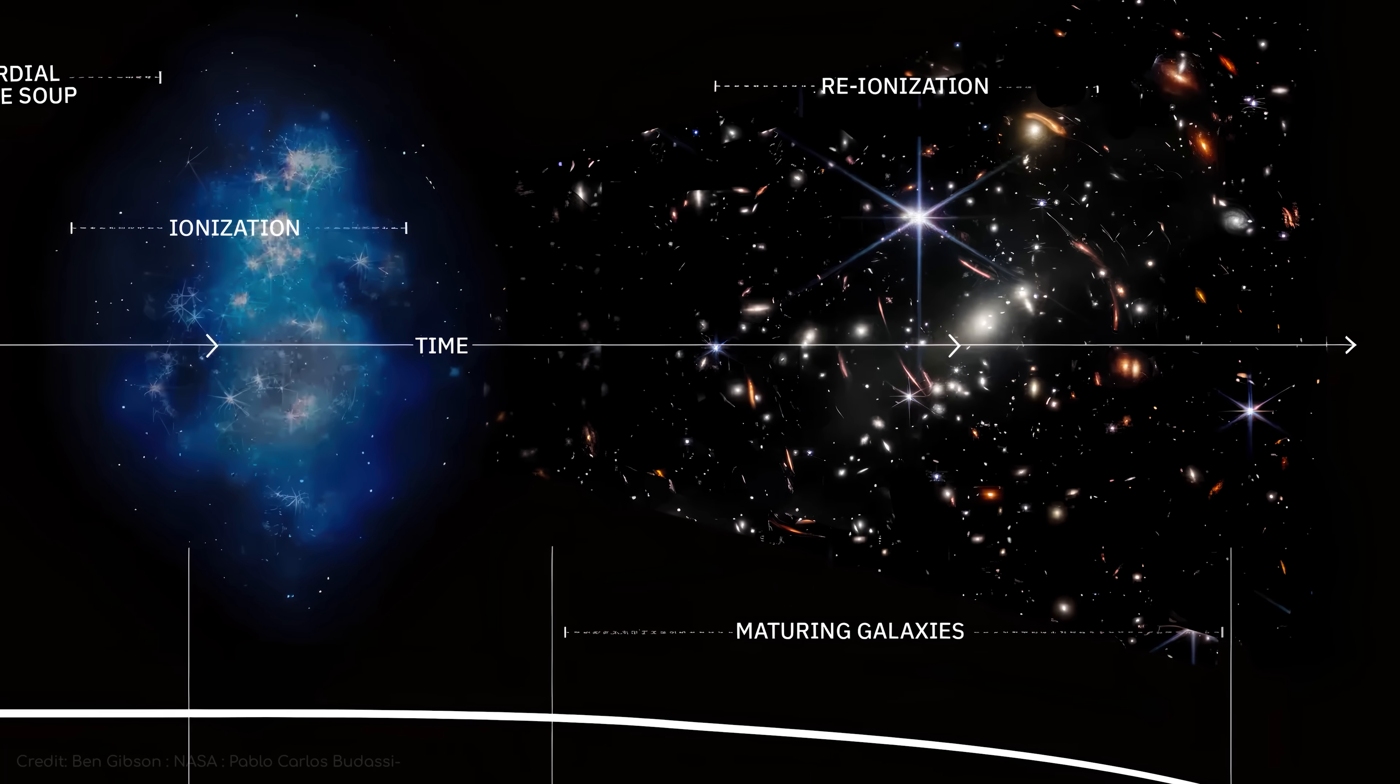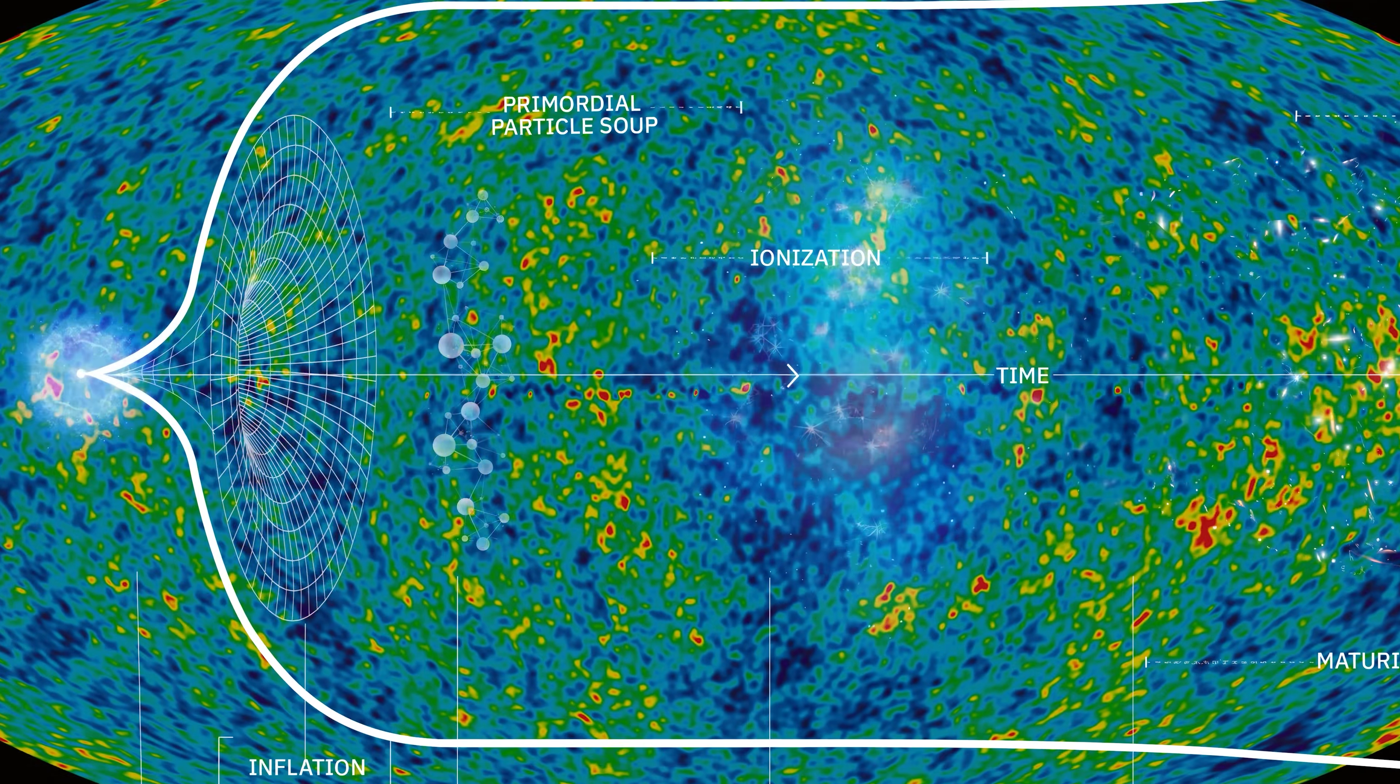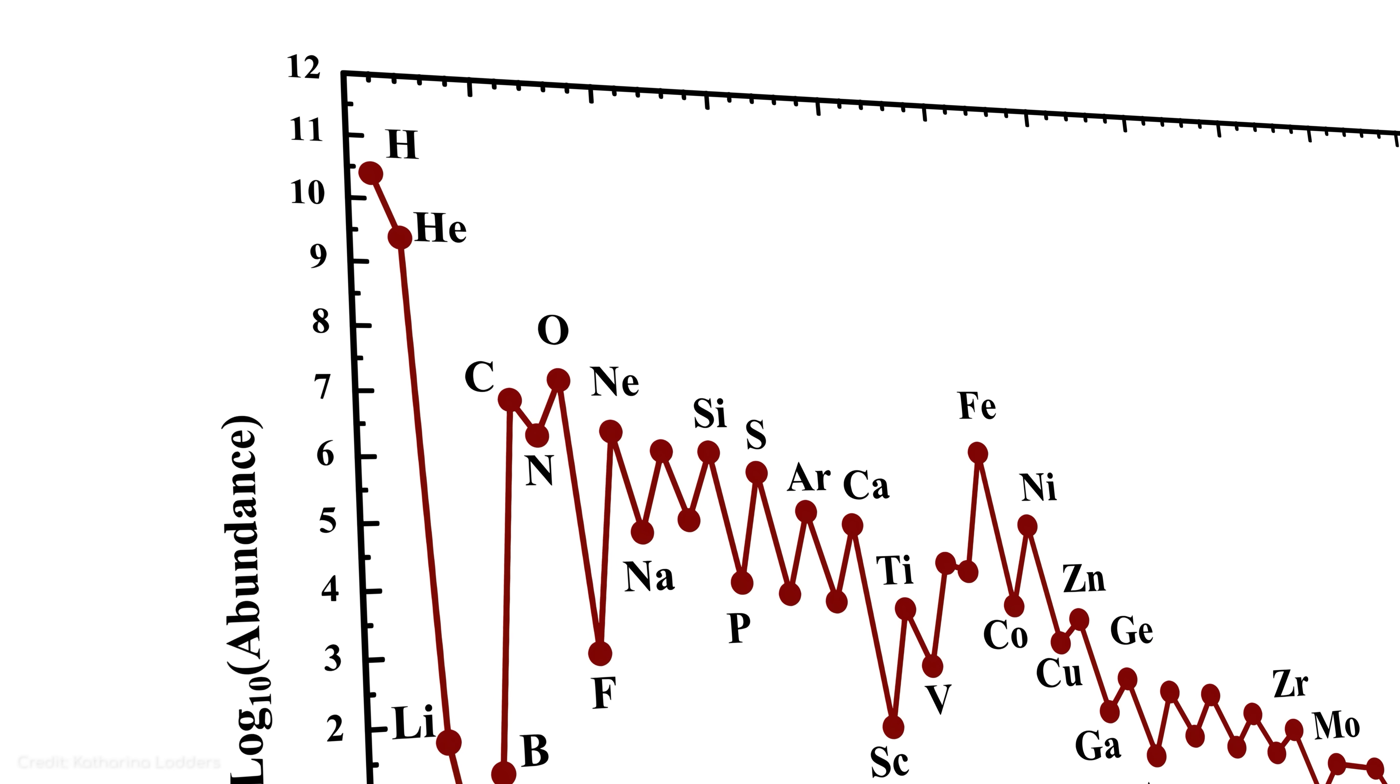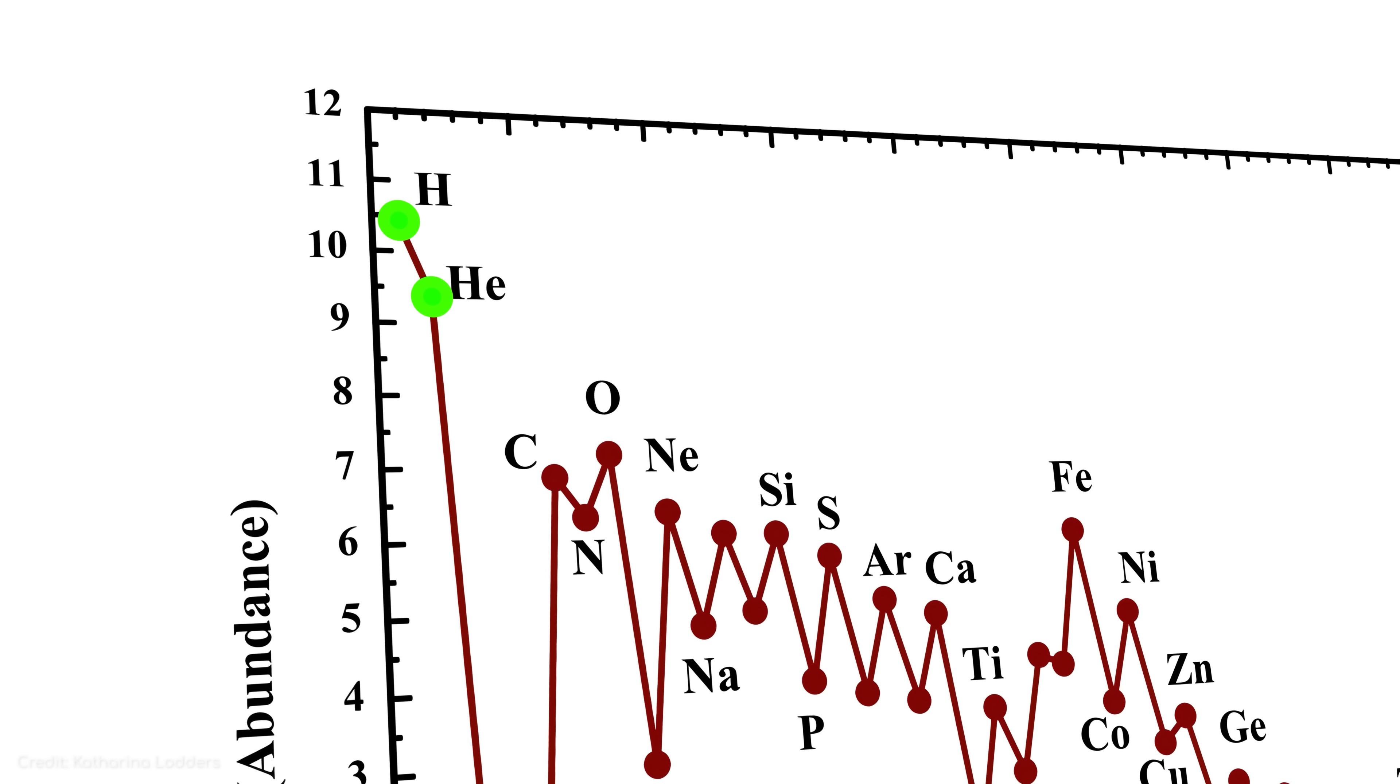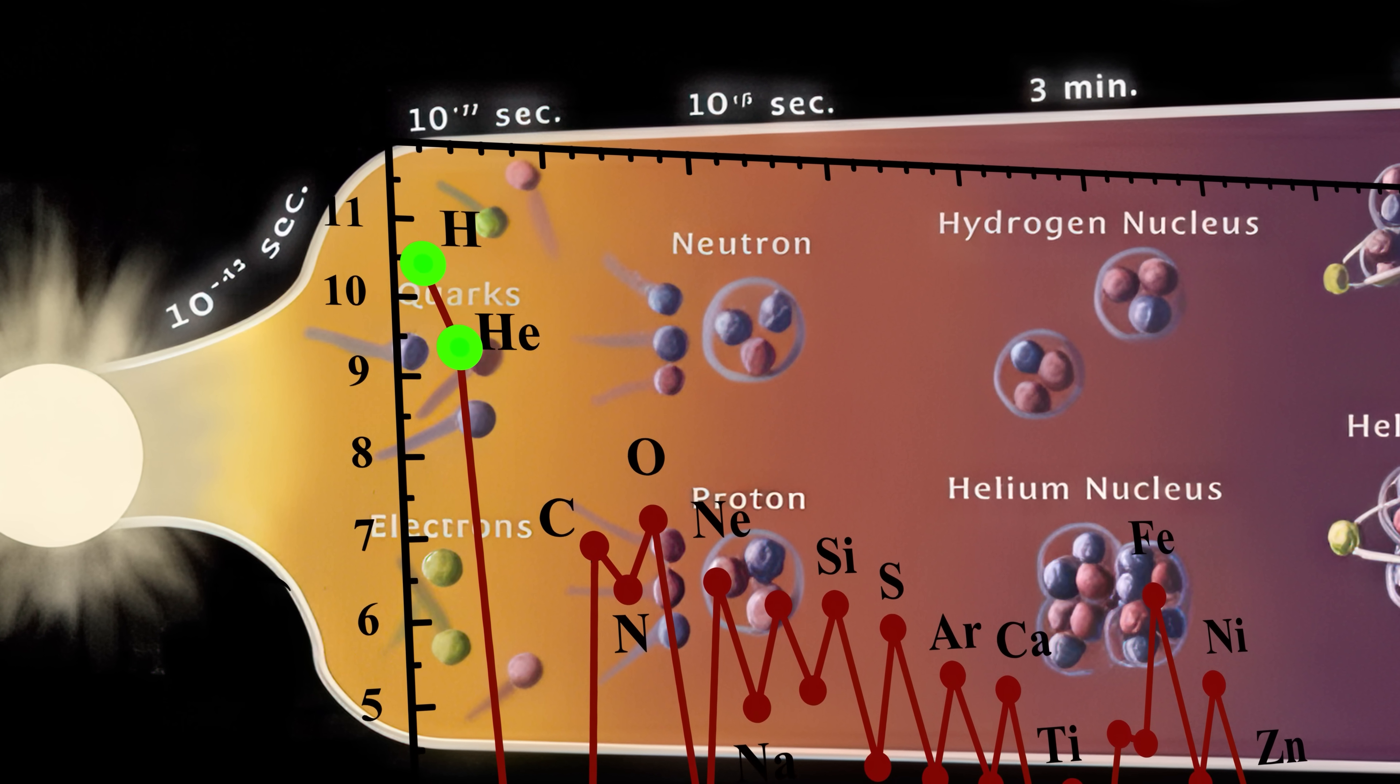It's difficult to throw out the hot Big Bang model completely. Nothing else does as good a job at explaining the existence of the cosmic background radiation, or the amounts of hydrogen and helium that we see in our universe. The quantities of those elements check out almost exactly with the hot Big Bang's predictions, which seems to be too perfect to be a coincidence. That said, scientists are becoming less certain about the model as it stands.